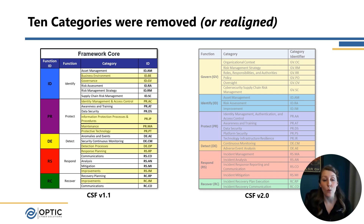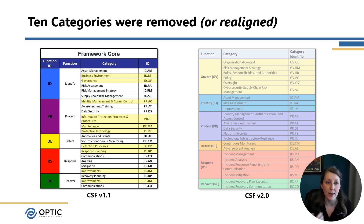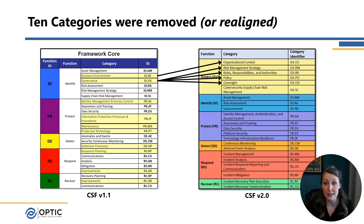There were 10 categories you're no longer going to see in 2.0. That sounds scary, but they really didn't remove the concepts — they're just realigned, renamed, and restructured. Things like business environment, governance, identity management and access control, and information protection processes and procedures won't appear as named before. Business environment is becoming Organizational Context — most concepts move right over. The old Governance category from 1.1 has been split across four different categories on the right: risk management, roles and responsibilities, policies, and oversight. Identity management and access control is largely just moving over to Identity Management, Authentication and Access Control — with authentication now being highlighted — and it got a new category identifier going from PR.AC to PR.AA.